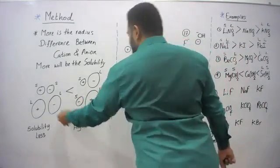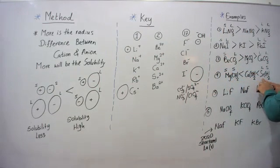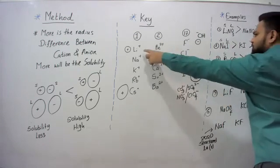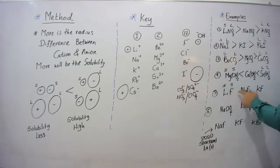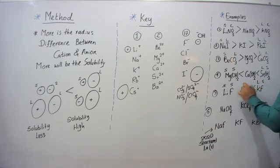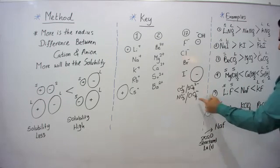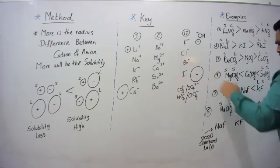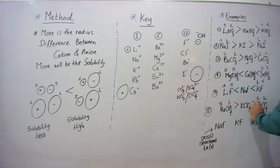For lithium fluoride and potassium fluoride: lithium is small, fluoride is also small — small/small. Potassium is larger — large/small. So KF is more soluble than LiF. For sodium chloride, potassium chloride, rubidium chloride: sodium is the smallest — small/large; rubidium is the largest — large/large with chloride being a large anion. Therefore NaCl is more soluble than others.